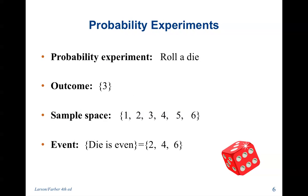So if our probability experiment is to roll a die, the outcome was a 3, our sample space was any number between 1 and 6 for a regular die, and the event die is even would be a subset of that event. Our outcome is not part of that event, but that is a subset of our sample space.